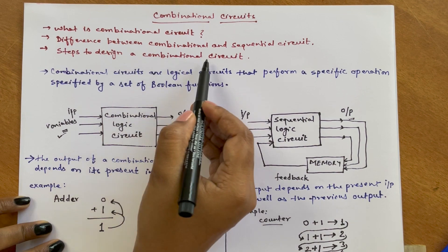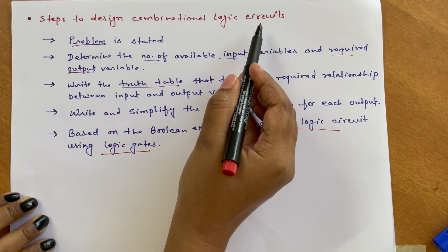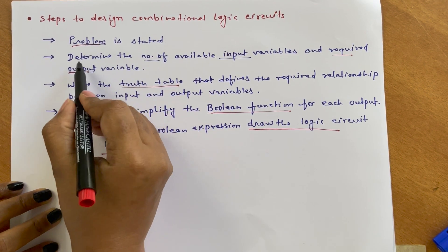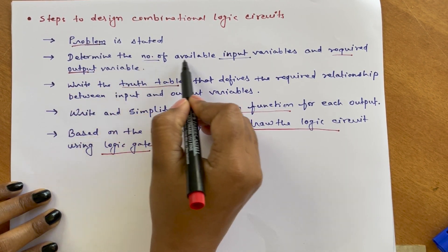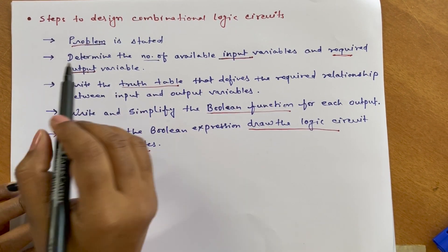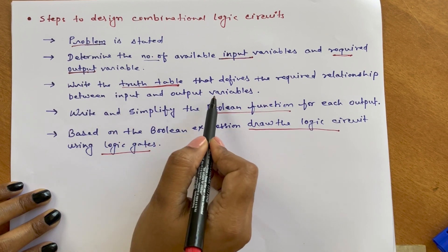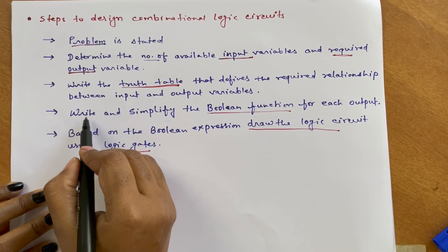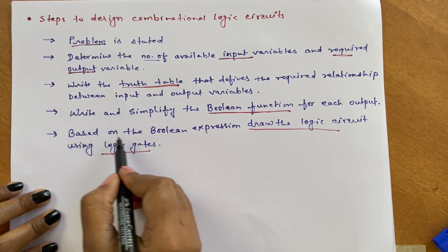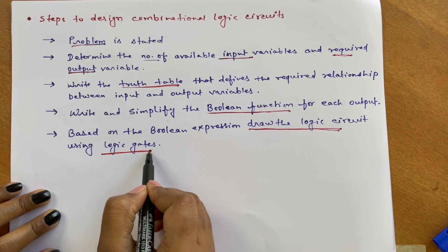Next are the steps to design a combinational logic circuit. First, a problem is stated. Based on the problem, determine the number of available input variables and required output variables. Write the truth table that defines the required relationship between input and output variables. Then write and simplify the boolean function for each output. Based on the boolean expression, draw the logic circuit using logic gates.